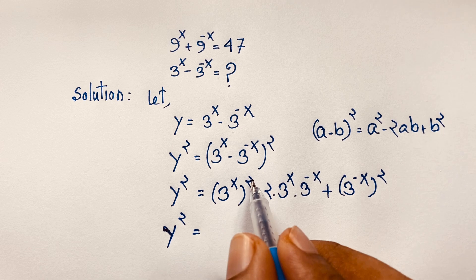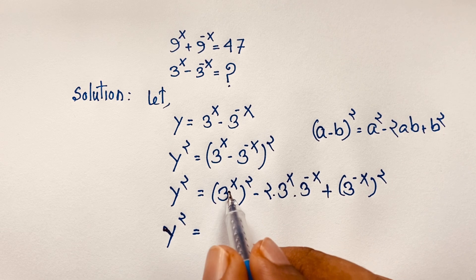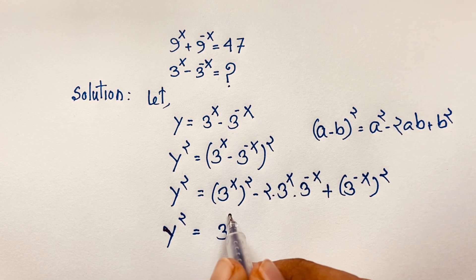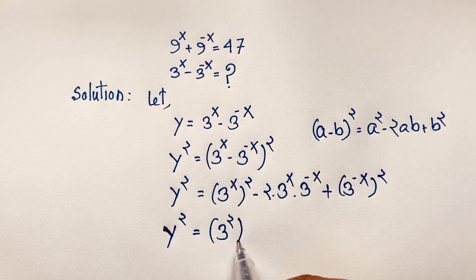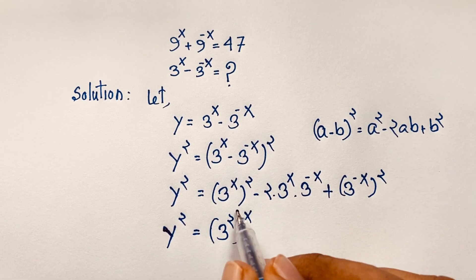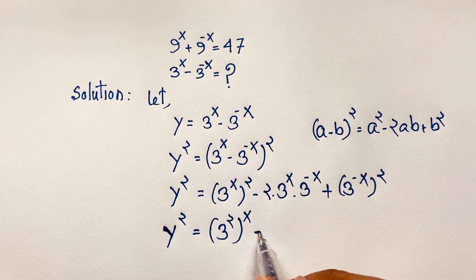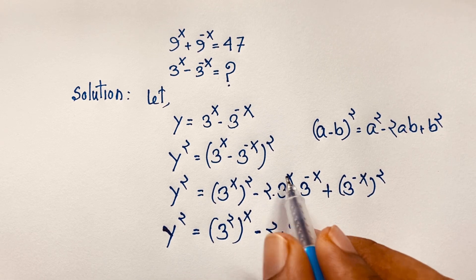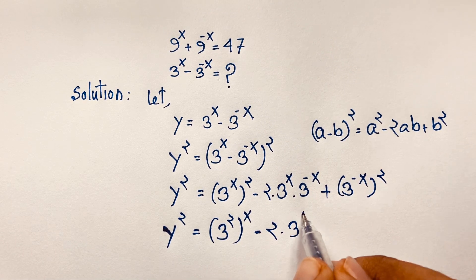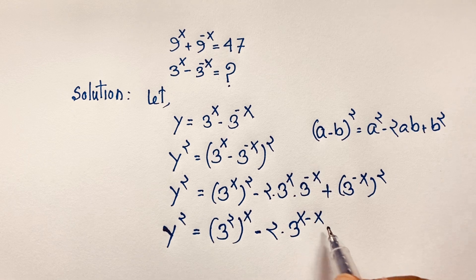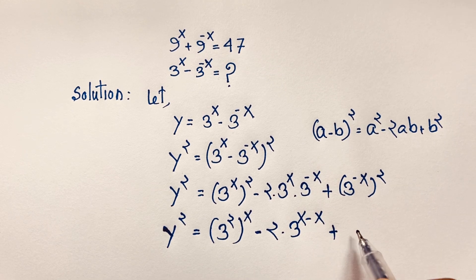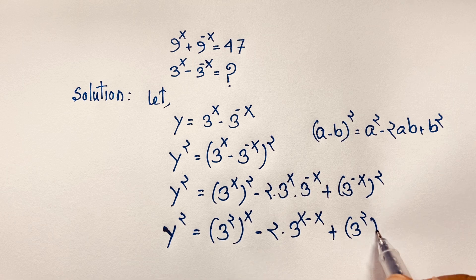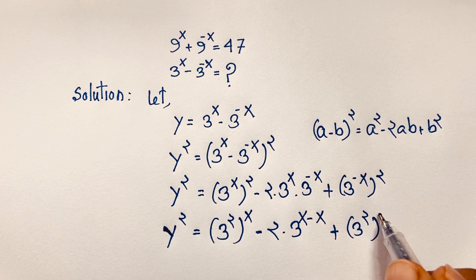Now you can see here y squared. I move the 2 inside the bracket, so 3 squared to the power x, which gives 9 to the power x according to the exponential formula. Then minus 2 times 3 to the power x times 3 to the power minus x. I add the exponents: x plus negative x, giving 3 to the power 2 to the power minus x.